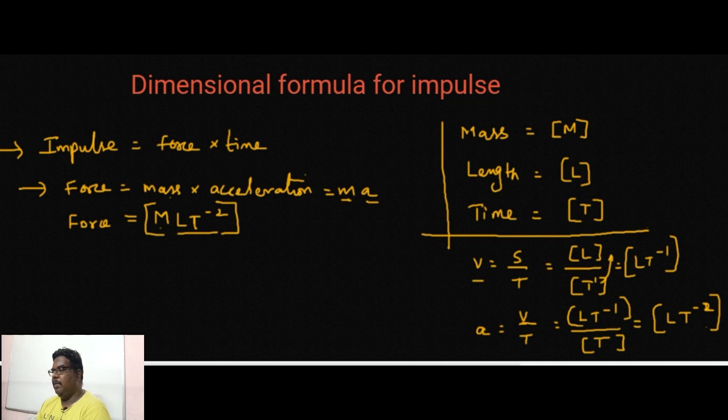Acceleration is the rate of change of velocity, that is velocity by time. Substituting the dimension formula for velocity from the previous calculation, L T power minus 1 divided by capital T. If you bring it to the top, I am getting L T power minus 2.